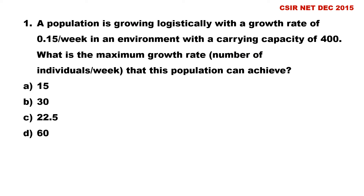This is a question from CSIR NET December 2015. The question is: a population is growing logistically with a growth rate of 0.15 per week in an environment with a carrying capacity of 400. What is the maximum growth rate — that means number of individuals per week — that this population can achieve? Options are: A) 15, B) 30, C) 22.5, D) 60.